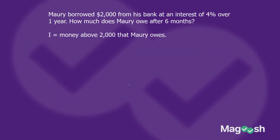Here's a real question: Maury borrows $2,000 from his bank at an interest rate of 4% over one year. How much does he owe after six months? We know I = PRT. I is the money above the $2,000 that Maury owes. The principal is 2,000. The rate is 0.04 — not 0.4, because that would be 40%. We want 4%, which is 0.04.